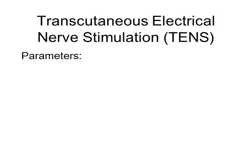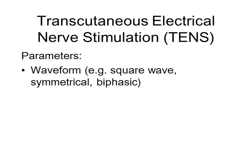Transcutaneous electrical nerve stimulation has a range of different parameters, and it is important that you know about the effects of each. The waveform basically describes the shape of each pulse of electrical stimulation, and will determine the comfort of stimulation. If there is an equal positive and negative charge, then no chemical effects will take place. This parameter is fixed on most TENS devices.